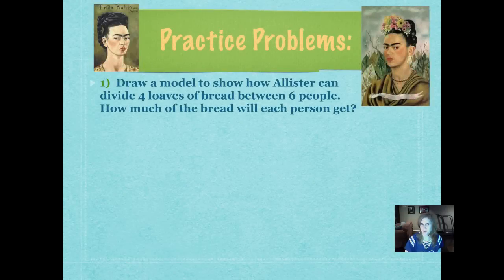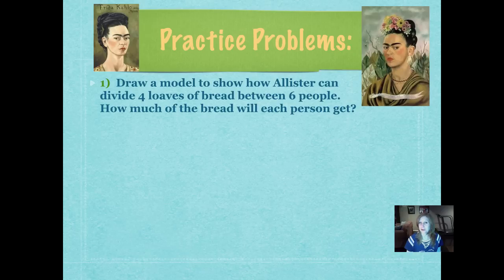Here is our first practice problem. Draw a model to show how Alistair can divide four loaves of bread between six people. How much of the bread will each person get? We're going to represent that amount using a fraction. Go ahead and try to draw a model — either a number line or a picture. I like pictures because they feel more real-world, but either way is fine. Pause it and push play when you're ready to go over it.